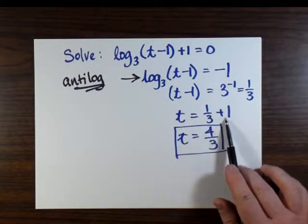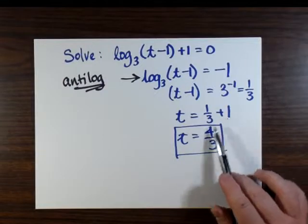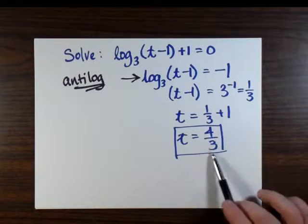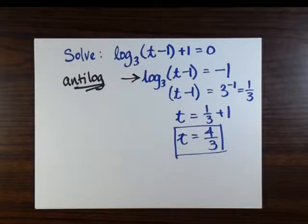And because we have a minus 1 on the other side, we get 3 to the minus 1, or 1 third. So that's t minus 1 is 1 third. And if we add 1 to both sides, we get 4 thirds as the answer to t.